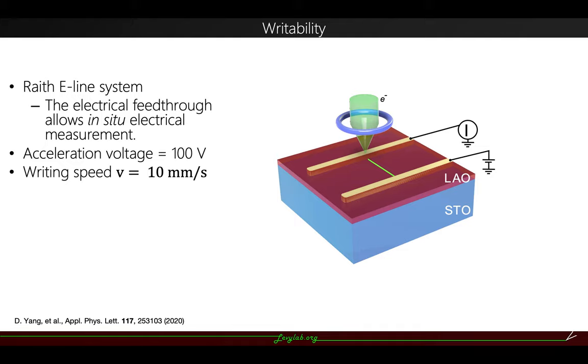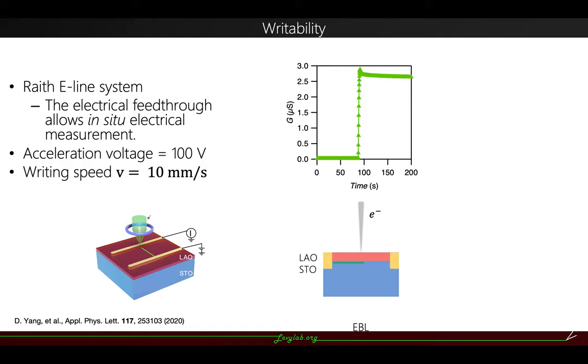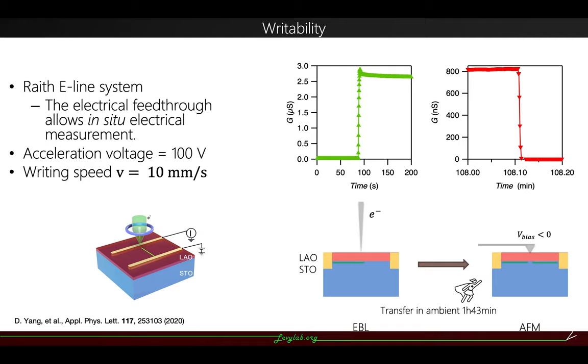When I do the electron beam lithography to connect these two electrodes, we can see a clear conductance jump from monitoring the conductance. And this writing process is also reversible, which means the structure can be erased by applying a negative voltage to the AFM tip and erase it.